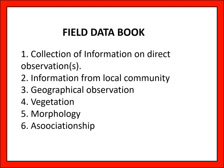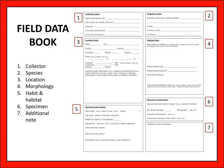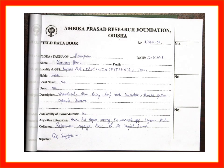For the field data book, the collection of information includes direct observation, information from the local community, geographical observation, morphology, vegetation, and association. The field data book has seven components: collector, species, location, morphology, habit and habitat, specimen, and additional notes.